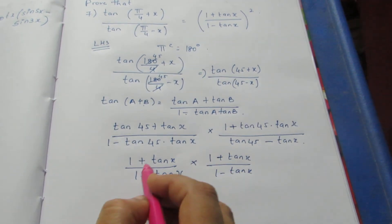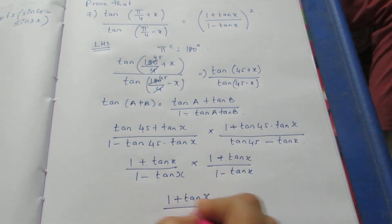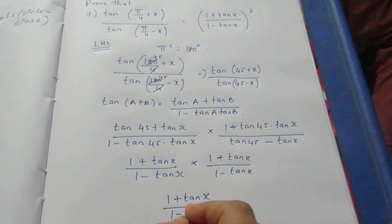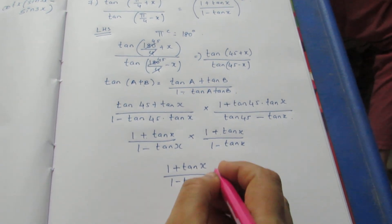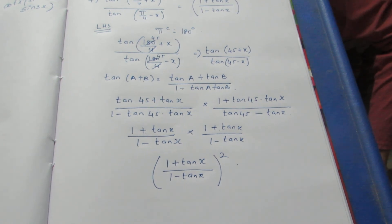So this is (1 + tan x) into (1 + tan x) is nothing but (1 + tan x) whole square. Similarly, (1 - tan x) into (1 - tan x) is (1 - tan x) whole square. I can write this to be the whole square for the whole. So that's all with the sum. Thank you.